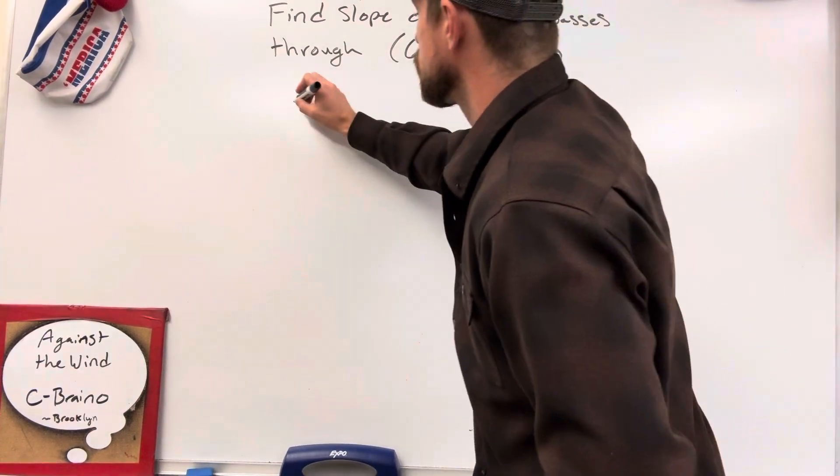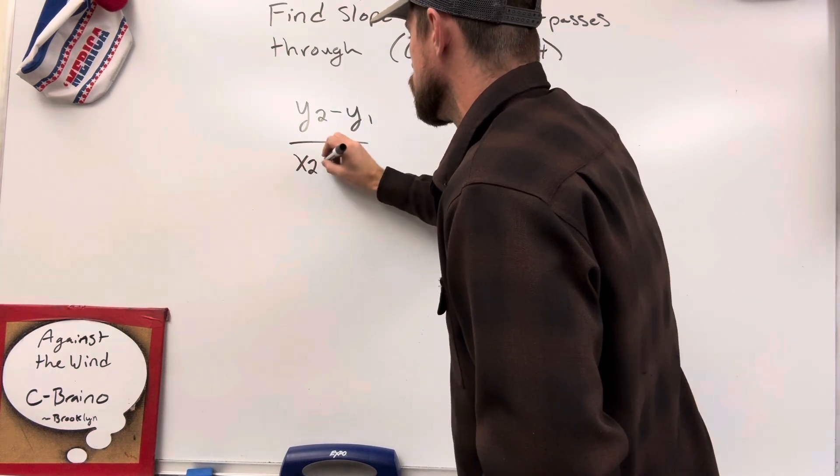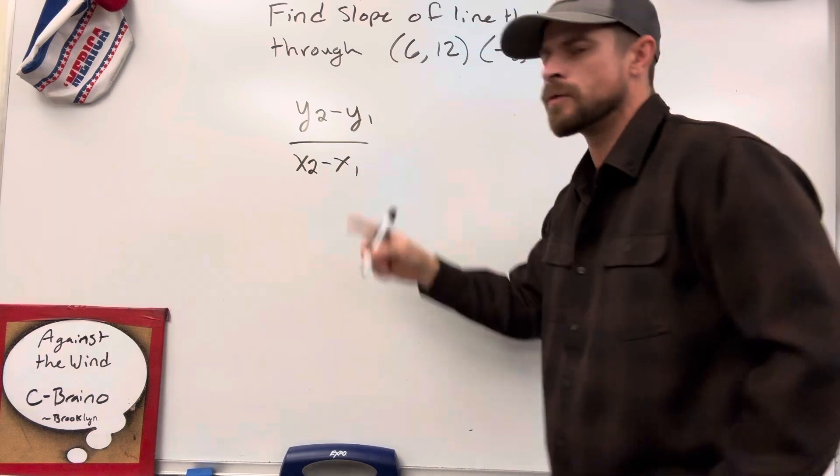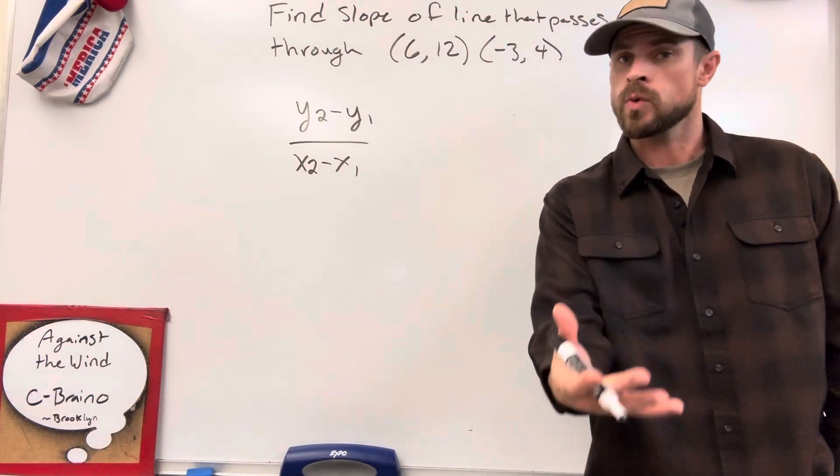So, first and foremost, you're going to be taught the slope formula, y2 minus y1 over x2 minus x1. We're going to go over this and talk about that, but I'm going to show you a different one that, in my opinion, is quite a bit easier.